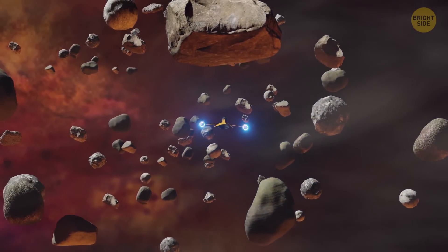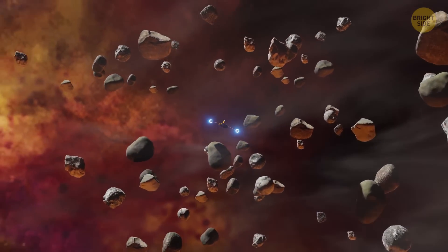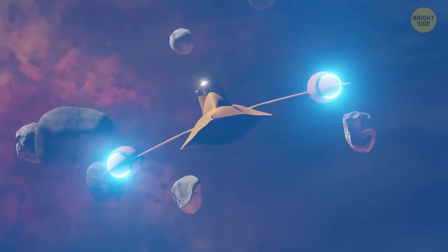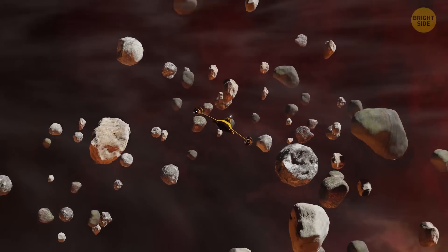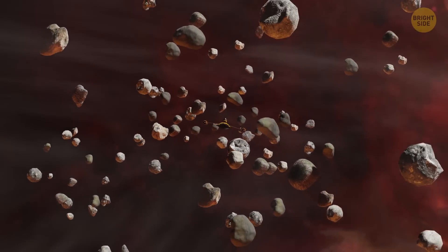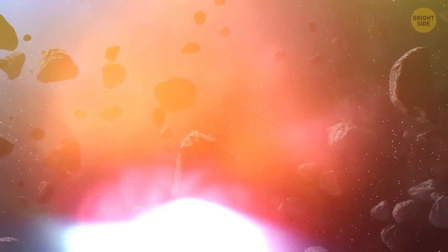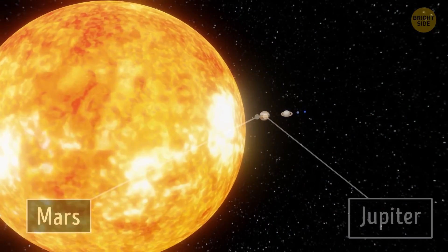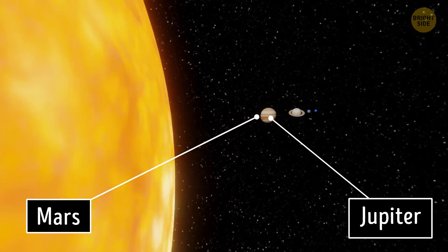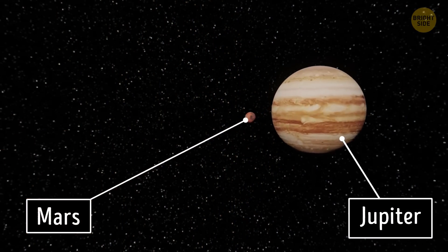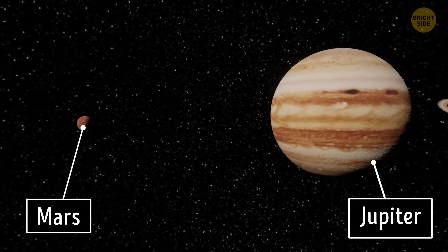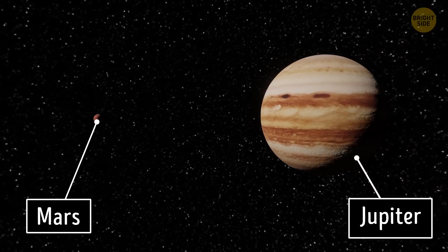In most sci-fi movies about space, the main character gets into an asteroid belt and must dodge countless rocks that threaten to damage their spacecraft. Well, sorry to disappoint, but that's nothing like the real thing. The only asteroid belt astronomers know about is located between Mars and Jupiter. There are thousands of asteroids in this region, but they're so widely spaced that the chance of collision is next to nothing.